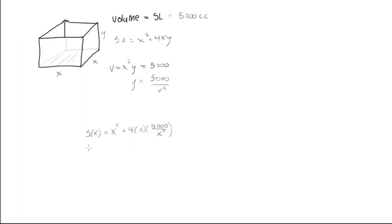And now what we want to do is just differentiate this. So we'll take S prime at x. We'll get 2x plus, now this is going to be 4 times 5,000. Actually we can cancel out this x here with one of those, so we'll get 4 times 5,000, we'll have 20,000.